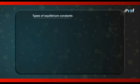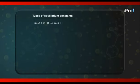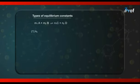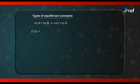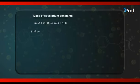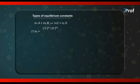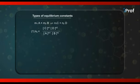Let us now see what are the types of equilibrium constants. Considering the same reaction m1A + m2B = n1C + n2D, the first type of equilibrium constant is Kc, or simply K. It is known as the equilibrium constant in terms of concentration or active mass. Kc = [C]^n1 × [D]^n2 / [A]^m1 × [B]^m2.